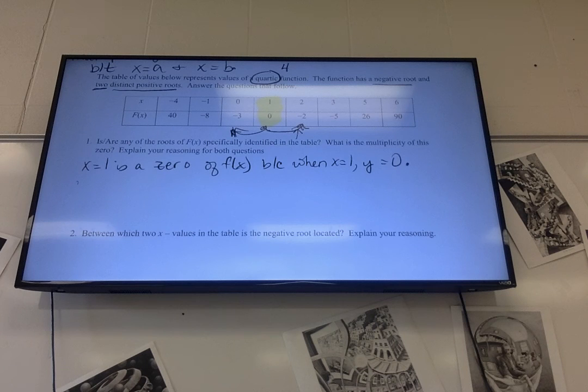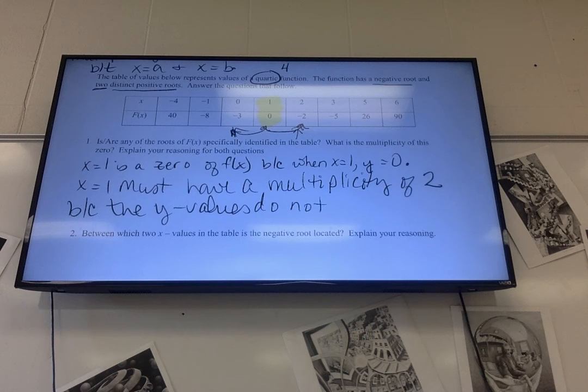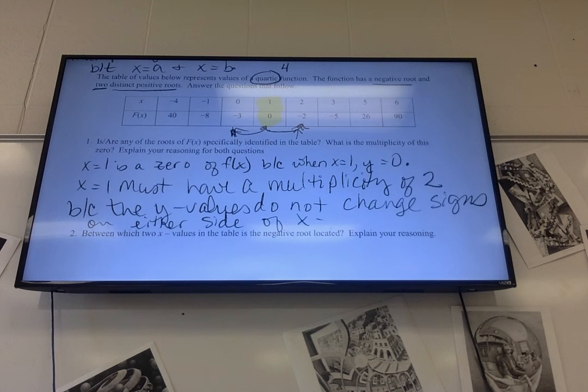So the y values - x equals one must have a multiplicity of two because the y values do not change signs on either side of x equals one.